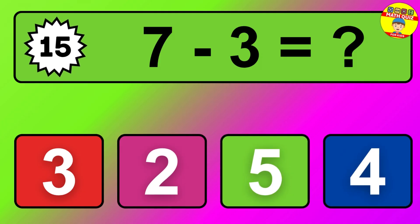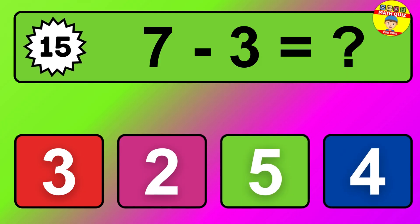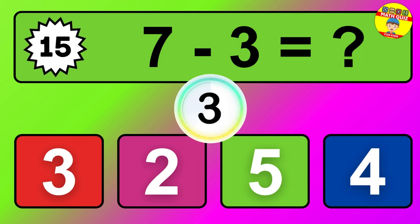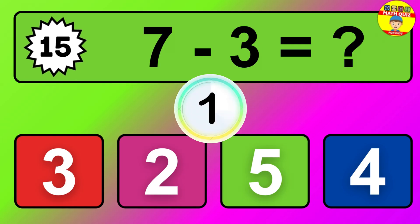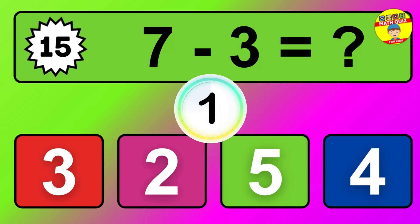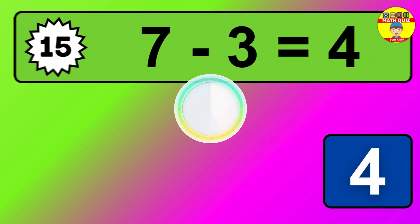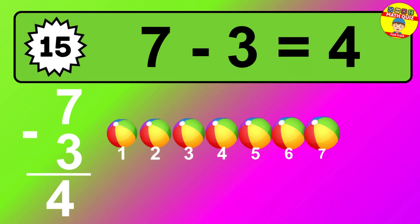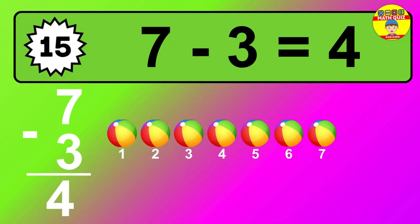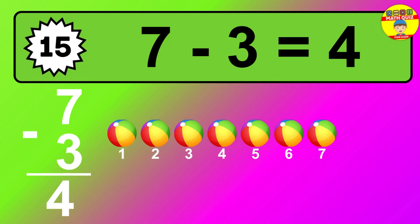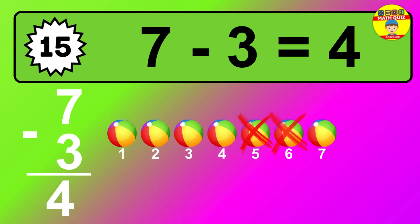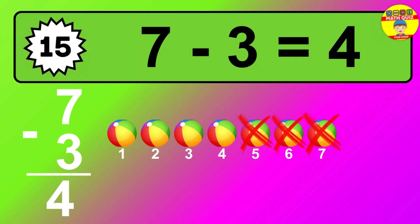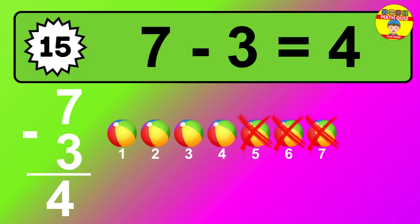Question 15. 7 minus 3 equals what? The answer is 7 minus 3 is 4. Let's count it: 1, 2, 3, 4.